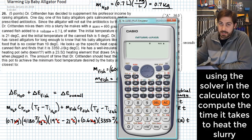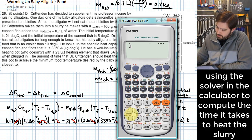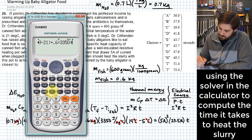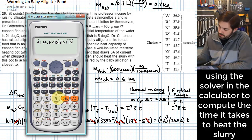So I'm going to just go ahead and enter it all just how it is. 0.7 times 4180 times 19 minus 21 plus 0.6 times 3350 times 19 minus 5. This is going to be equal to...